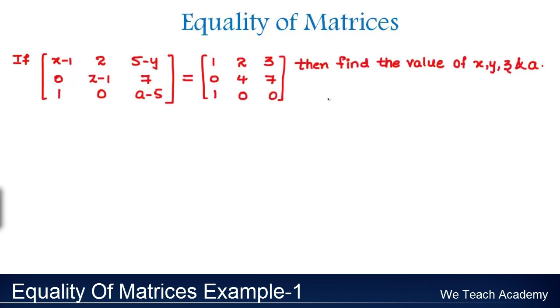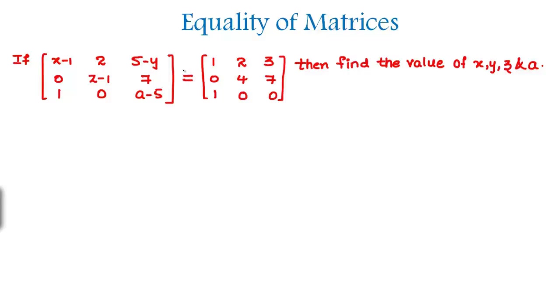So this is our given example where we have to find the values of different variables. In order to find the variables, first let us check out the equal symbol between two matrices. This symbol represents that both the matrices are equal. And now we can easily find the values of the variables by just comparing the corresponding elements.